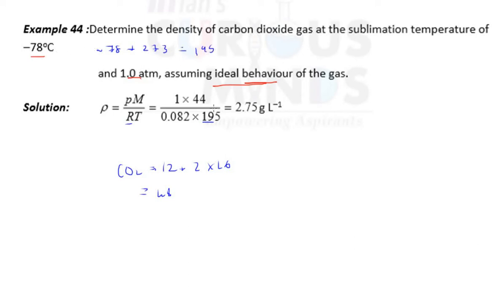So the answer will be 2.75, but units, what will happen? Density, you know what units are there? It is gram per liter, kg per meter cubed, gram per meter cubed, kg per liter.